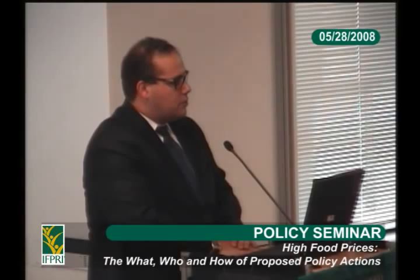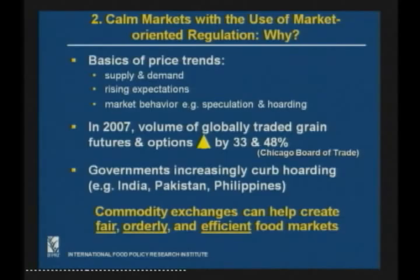The second component is how to use market-oriented regulation to calm markets. As we know, there are the fundamentals — supply and demand effects on prices. But there are also rising expectations and market behavior, part of which is speculation and hoarding. It is very difficult to disentangle what is expectations from what is speculation and what is hoarding. What we do know is that in 2007 there was an increase in the volume of global traded grain futures and options by 33 and 48 percent from the Chicago Board of Trade. Governments are also increasingly hoarding — like India, Pakistan, and the Philippines — which pressures demand and drives up prices.